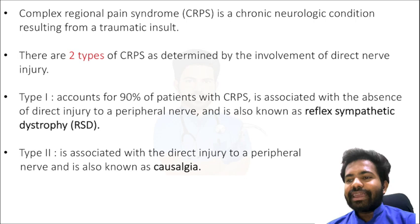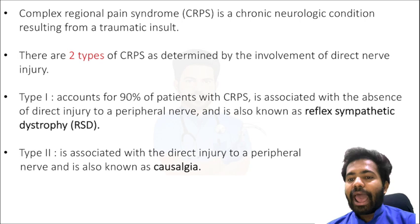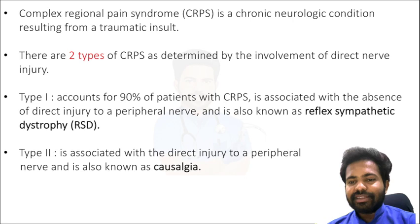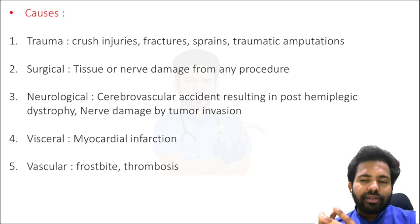Type 1 CRPS accounts for 90% of patients and is associated with the absence of a direct injury to the peripheral nerve — there is no direct nerve injury. This is also known as Reflex Sympathetic Dystrophy (RSD). Type 2 CRPS is associated with direct injury to a peripheral nerve, and is also known as causalgia.